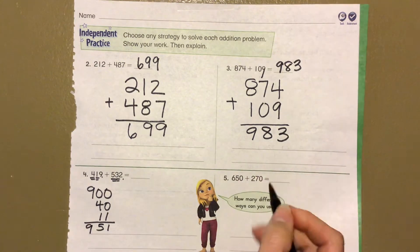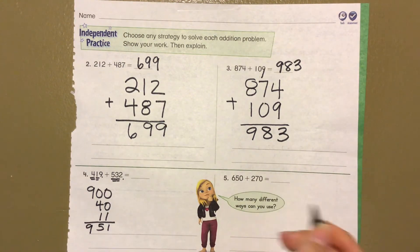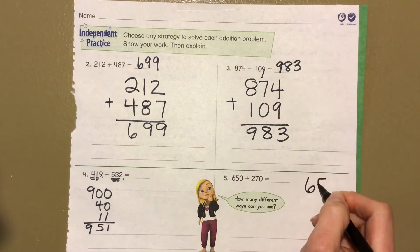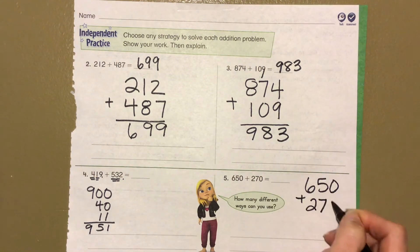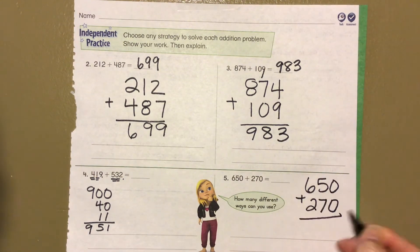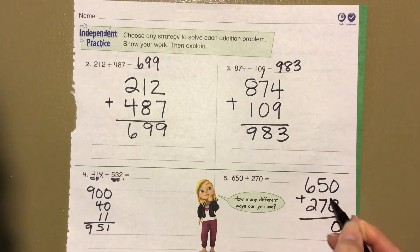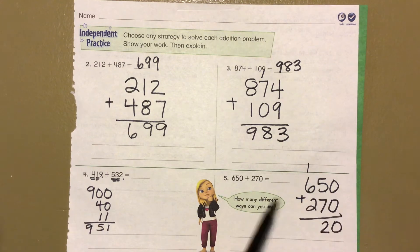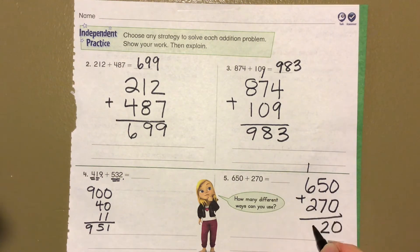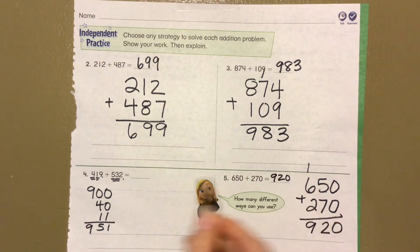The last problem: 650 plus 270, stacking again. 0 plus 0 is 0. 5 plus 7 is 12 — put 2 in the tens place, regroup that one bundle. 6 plus 2 is 8, plus one more is 9. We get 920.